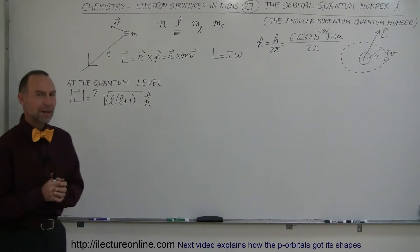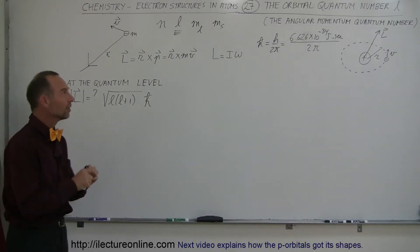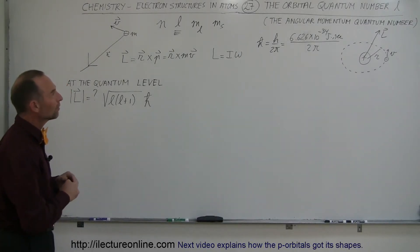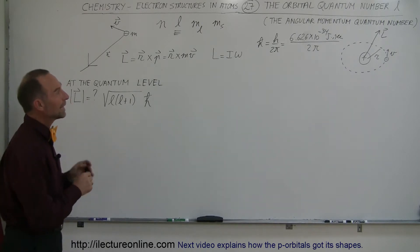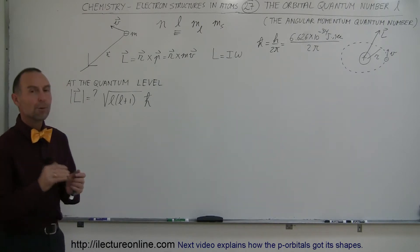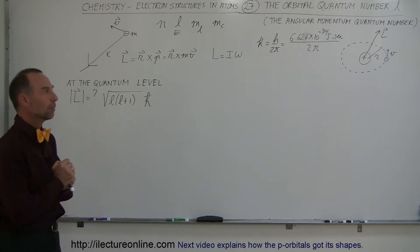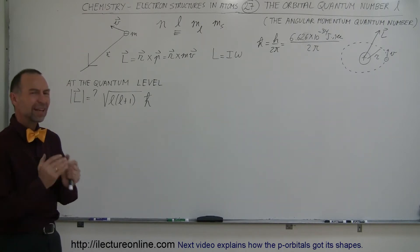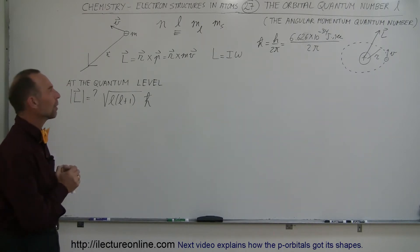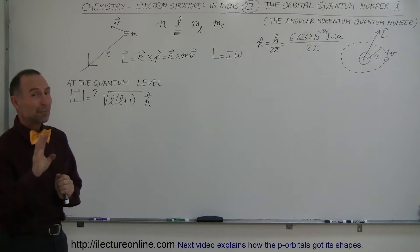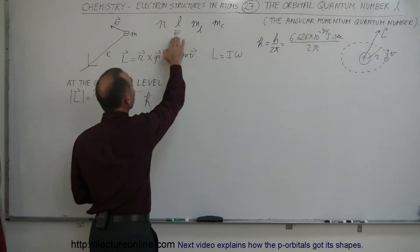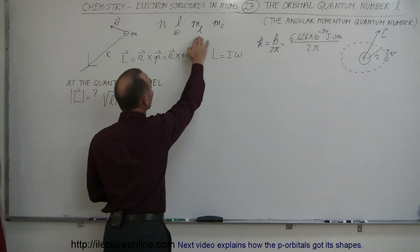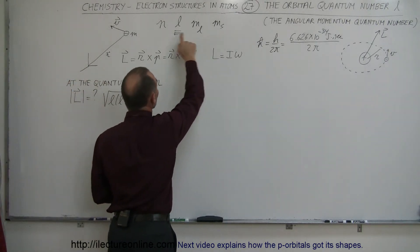This video is about the second quantum number called the orbital quantum number, or the angular momentum quantum number. Remember there are four quantum numbers: N, L, M sub L, and M sub S.